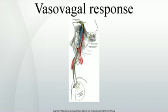Fainting occurs with the loss of oxygen to the brain. The autonomic nervous system's physiologic state leading to loss of consciousness may persist for several minutes, so if sufferers try to sit or stand when they wake up, they may pass out again. The person may be nauseated, pale, and sweaty for several minutes or hours.